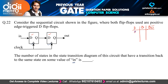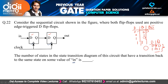D flip-flops are called delayed flip-flops. The output is always the same as the input — it is just delayed by one clock cycle. The possible input-output combinations are: D=0 gives Q=0, D=1 gives Q=1. It is used to store one bit of information. To draw the state transition diagram, we consider all possible states of Q1 and Q2.